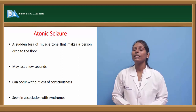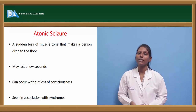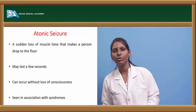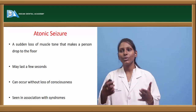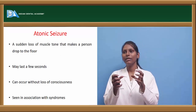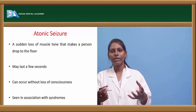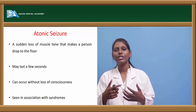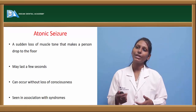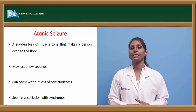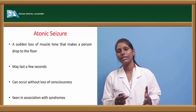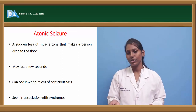Atonic seizure involves a sudden loss of muscle tone that makes a person drop to the floor. There is no muscle contraction, but the patient loses muscle tonicity and falls to the ground. This usually lasts for a few seconds and can occur even without loss of consciousness, and it is seen associated with certain syndromes.